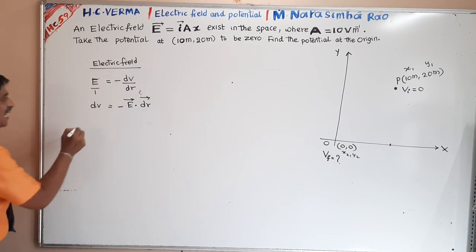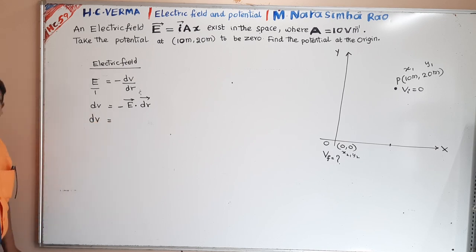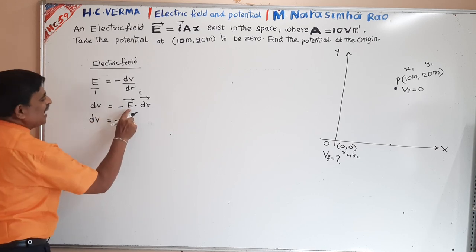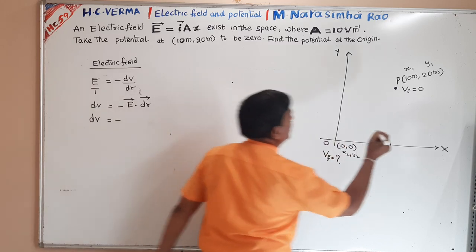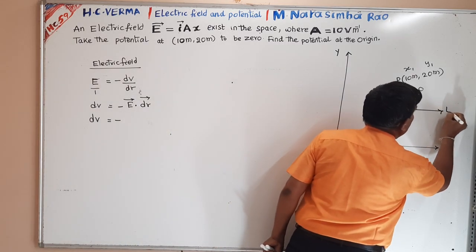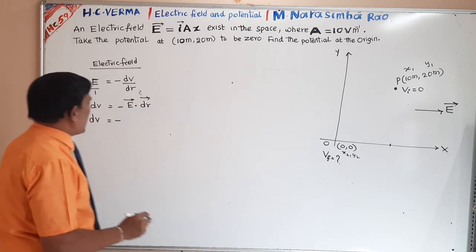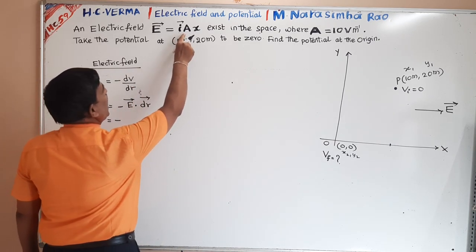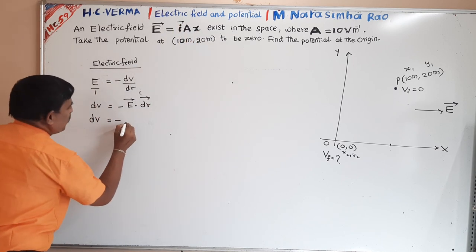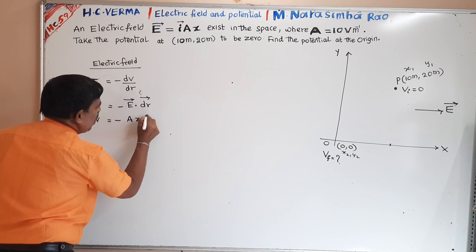Here, dV is equal to the difference in potential between two points very close to each other, minus E dot dR. The electric field is along the x-axis and is given as E equals AX times î-cap.